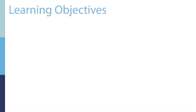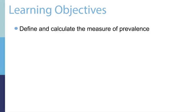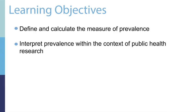Welcome. In this segment, we're going to talk about the measure of rates. Rates are a very flexible measure of health outcome occurrence. They are more exact, and they also reflect a more dynamic, changing study population. The learning objectives for this segment are to define and calculate the measure of prevalence and be able to interpret prevalence within the context of public health research.